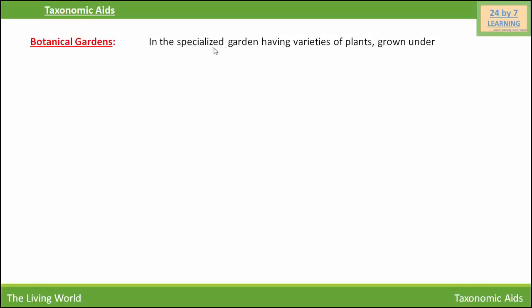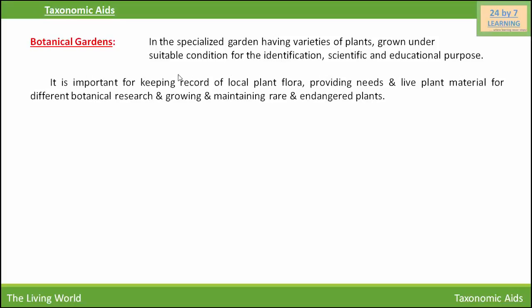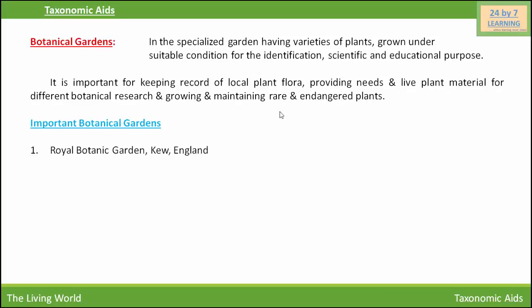Botanical gardens are specialized gardens having varieties of plants grown under suitable conditions for identification, scientific, and educational purposes. They are important for keeping records of local plant flora, providing live plant material for different botanical research, and growing and maintaining rare and endangered plants. There are more than 500 botanical gardens in various countries of the world.